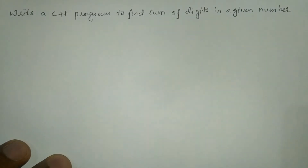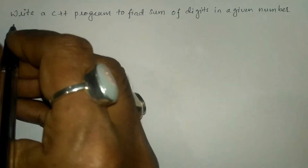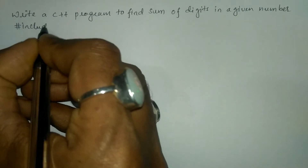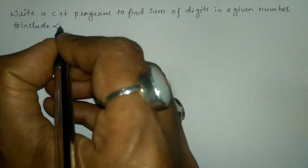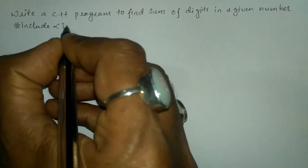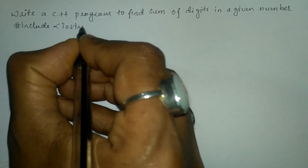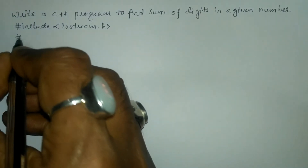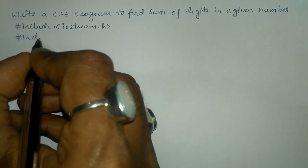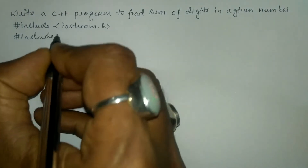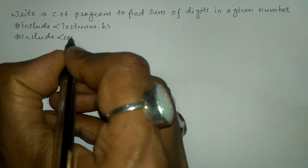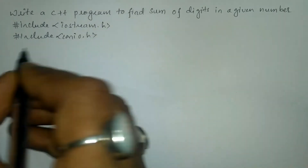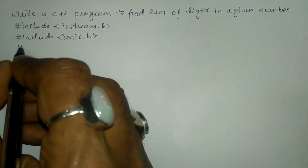Now let us write the preprocessor directives: hash include in angular brackets I'm going to write iostream.h header file, and the next preprocessor directive is hash include in angular brackets we will write conio.h header file.